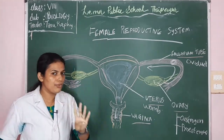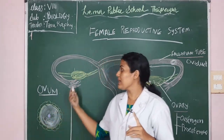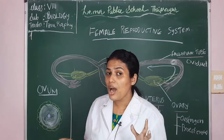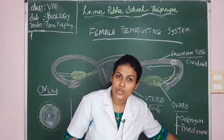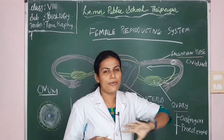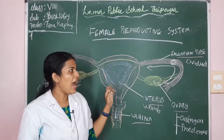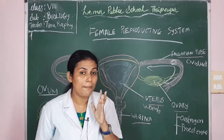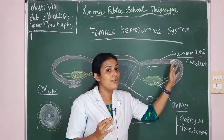So the female reproductive system also has four parts. First — ovary, which produces the ovum; a single ovum is released alternatively by both ovaries and the ovum is large compared to sperm. The ovary also secretes female hormones: estrogen and progesterone. Second — fallopian tube, which connects the ovary and the uterus and is also the site for fertilization.